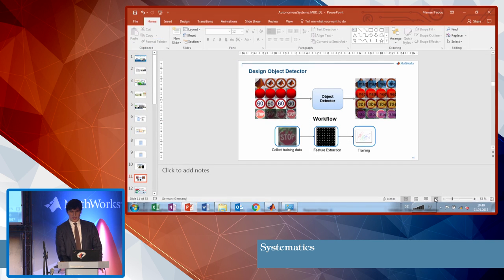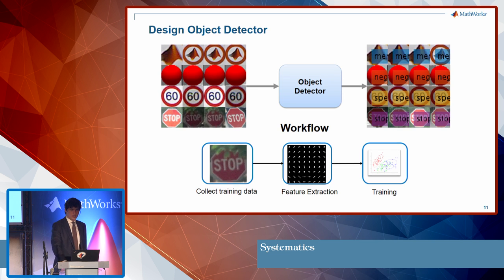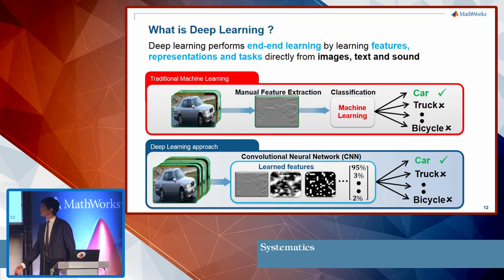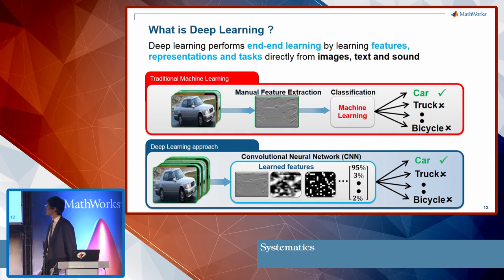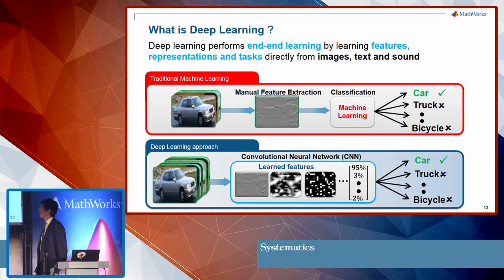We saw traditional machine learning where we manually extract features from images before classification. An alternative and growing trend in the machine learning community is deep learning, where a deep network learns the features directly from the image data itself. It's a very promising approach that enables higher precision but requires more data.